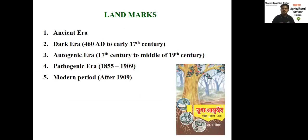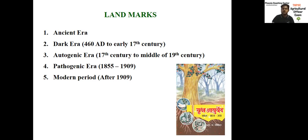Let us enter into the historical landmarks. The origin of plant pathology is always associated with the origin of plants and microbes — wherever plants exist, microbes are there, and where microbes are there, disease will surely occur. Based on the evidences, the landmarks in plant pathology were described in five different periods: the ancient era, the dark era, the autogenic era, the pathogenic era, and the modern period.